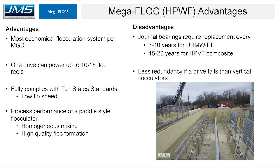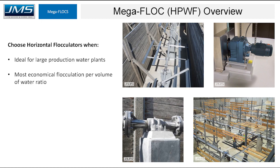Other advantages of the horizontal paddle wheel flocculator are that this is the most economical flocculation system per MGD of water. One drive can operate 10 to 15 reels as needed. It fully complies with Ten State Standards on tip speed, and the paddle style delivers the highest quality floc formation. Disadvantages are that journal bearings require replacement — with normal UHMWPE every 7 to 10 years, but with Teflon-impregnated composite material up to 15 to 20 years. With horizontal configuration there is less redundancy, so if a drive fails a large number of reels go out. Choose horizontal flocculators for large production water plants where economical flocculation per volume is the priority.